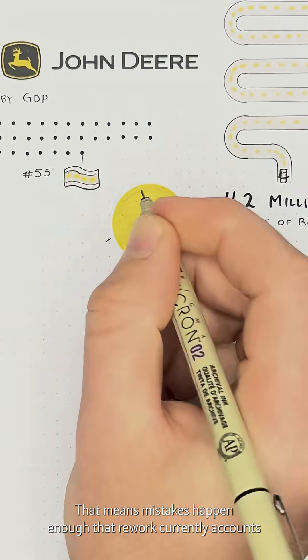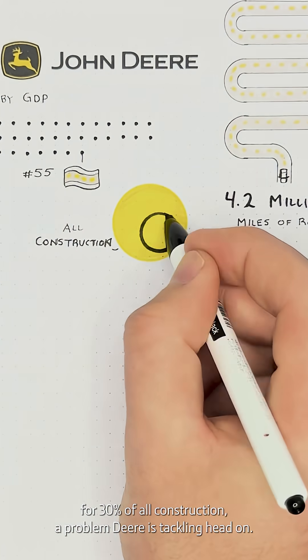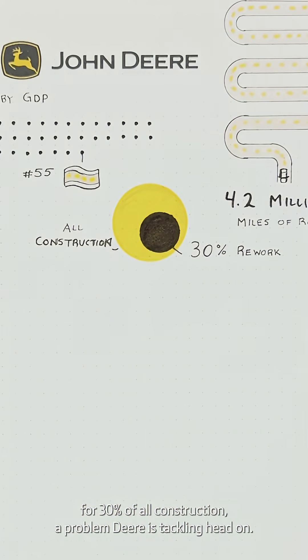That means mistakes happen, enough that rework currently accounts for 30% of all construction, a problem Deere is tackling head-on.